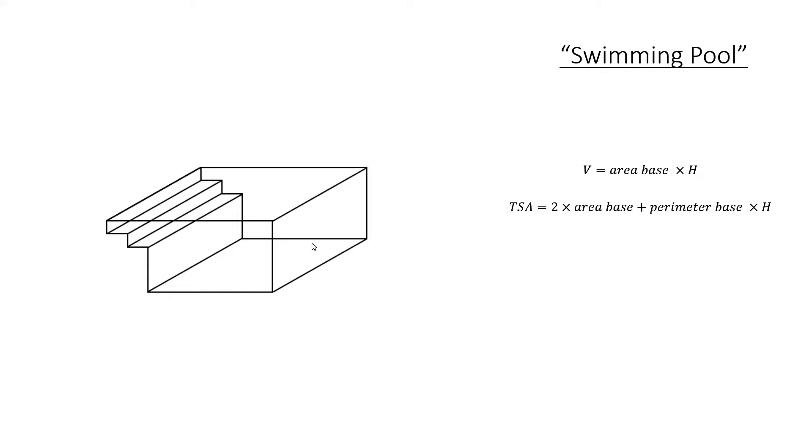So the volume will be the area of the base times the height and the total surface area will be 2 × area base + perimeter base × H as normal.